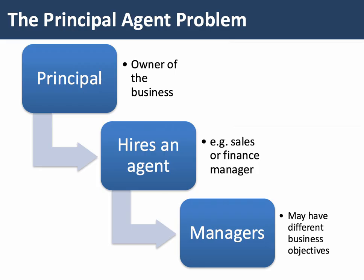So you have owners of a business — the principals — and agents of a business — the managers. The key point is that managers may have different objectives than the shareholders. Typically shareholders want to maximize profit to maximize their return on investment, both in terms of share price and dividends. Managers, who make key day-to-day decisions on price, marketing, research, and product, may have different motivations and objectives.